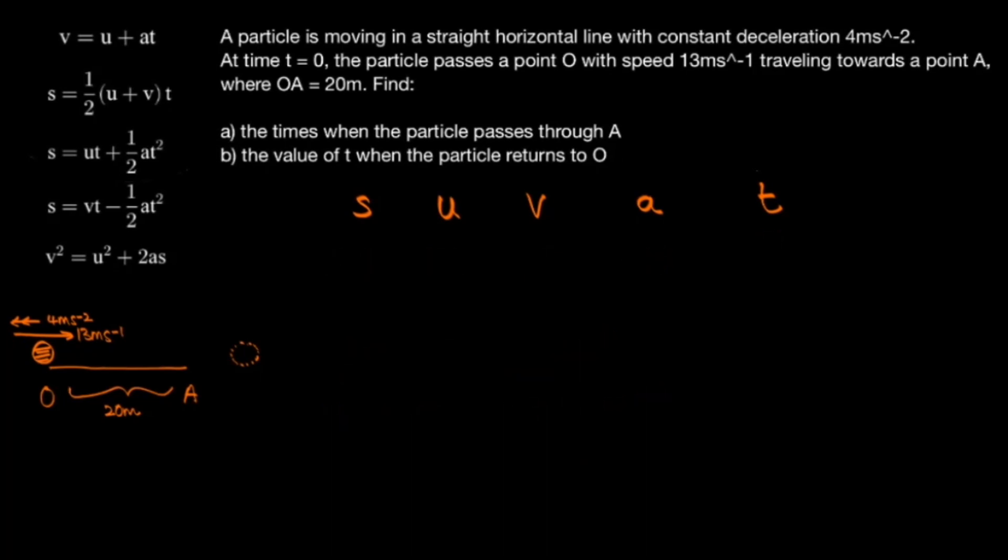In part B we're asked to find the value of T when the particle returns to O. So we're going to keep the same diagram because essentially nothing has already changed. But we've removed the numbers below the letters because our values are going to be different this time. So for example the displacement now is going to be 0 because we're interested in the moment when the particle is traveling left from this position and returns back to O. So the total displacement is 0.